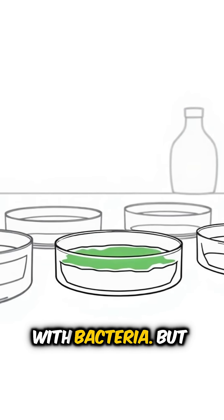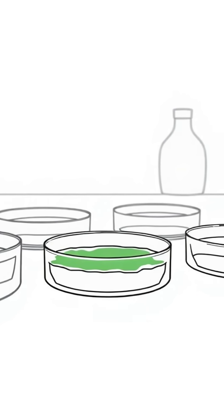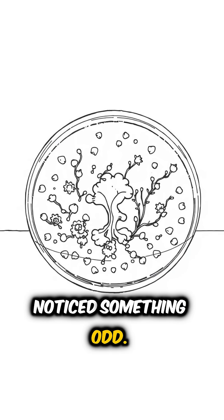Petri dishes filled with bacteria, but wait. One dish had been contaminated by a green mold. Instead of throwing it away, Fleming noticed something odd.